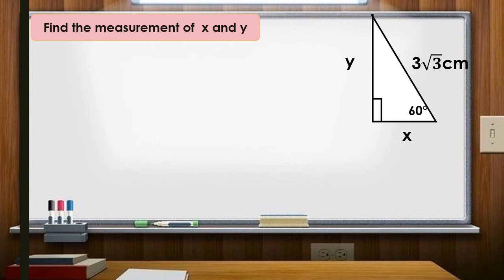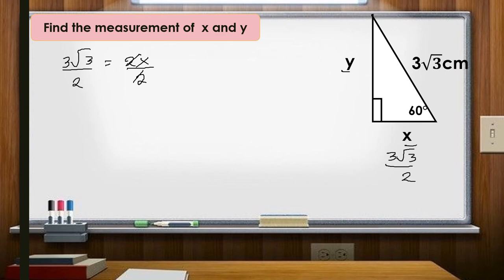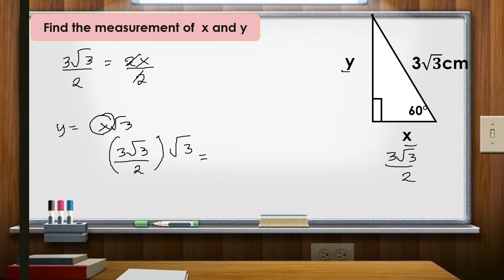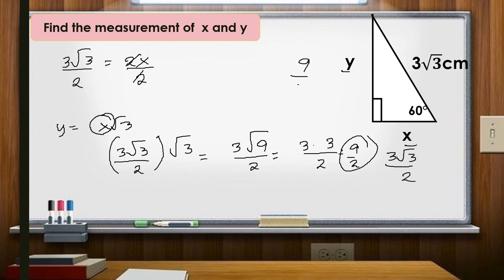Find the measurement of x and y. The given value is the hypotenuse: 3√3. Since the hypotenuse equals 2x, we solve: x = 3√3/2. To find y, since y = x√3, substitute: y = (3√3/2) × √3 = 3 × √9 / 2 = 3 × 3 / 2 = 9/2. Therefore x = 3√3/2 and y = 9/2.